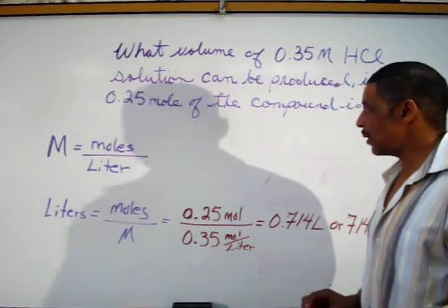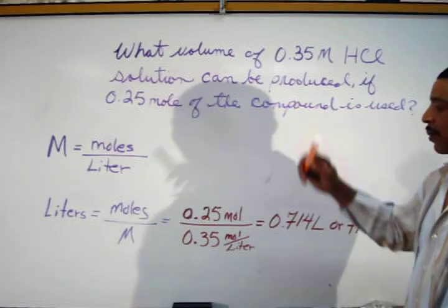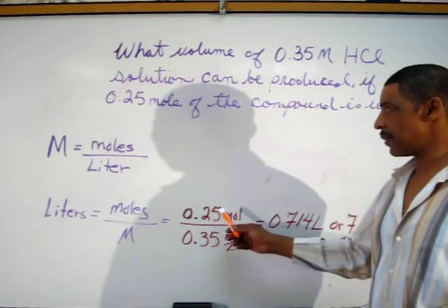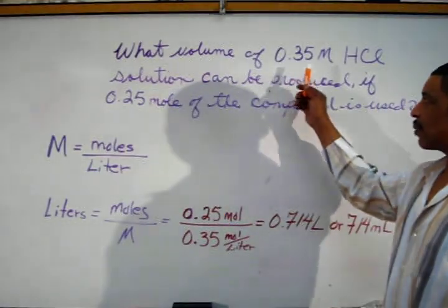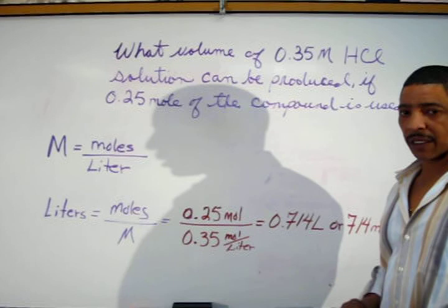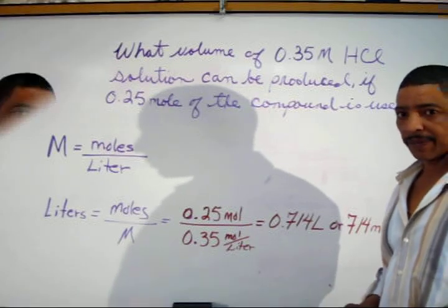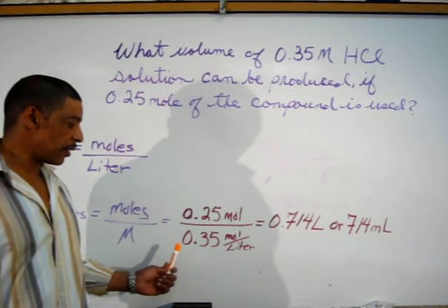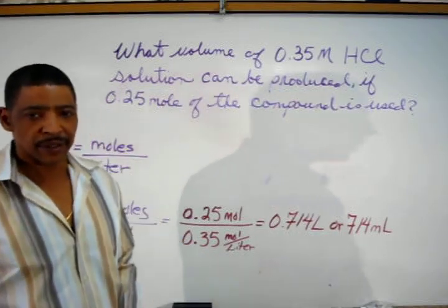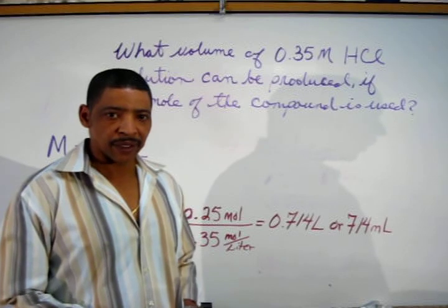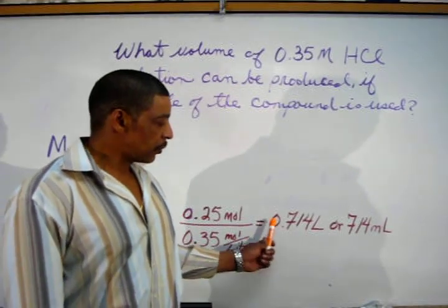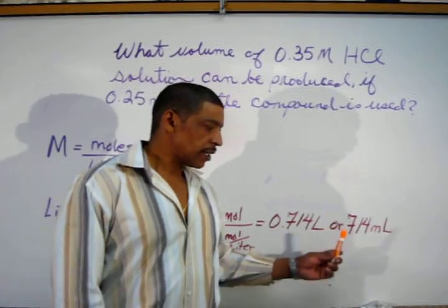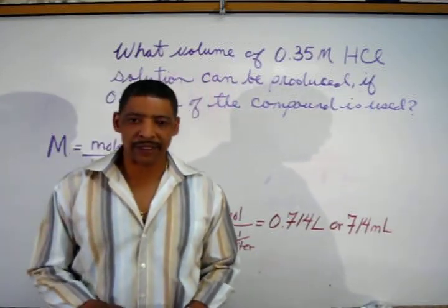Next, simply insert the values from the practice problem, where 0.25 mole is given and 0.35 molar is given. At this point, divide 0.25 mole by 0.35 mole per liter. This will yield the following result: 0.714 liter, or 714 milliliters.